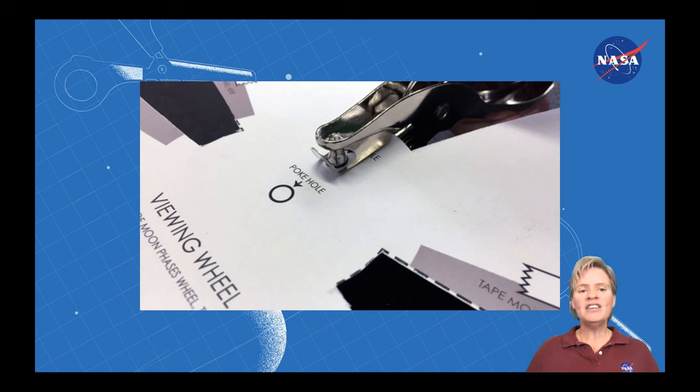If you have a hole punch, your next step is to take that hole punch and get the viewing wheel and where it says punch hole, punch a hole. If you don't have a hole punch, use your sharpened pencil. Very carefully poke a hole in the middle of that circle and kind of wiggle it around until you have a hole of about the right size. And then cut the extra paper off so that it's a nice clean clear circle.